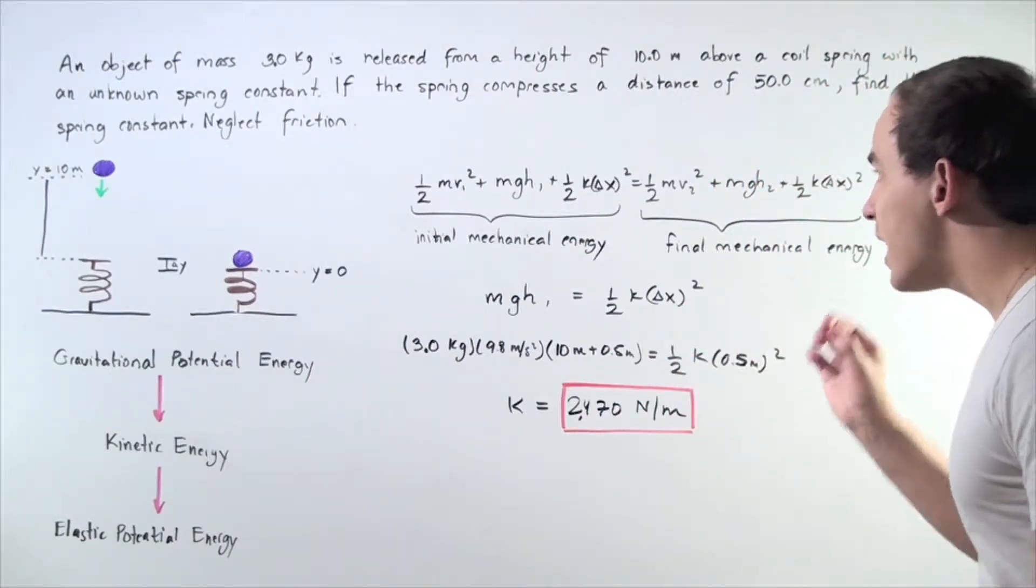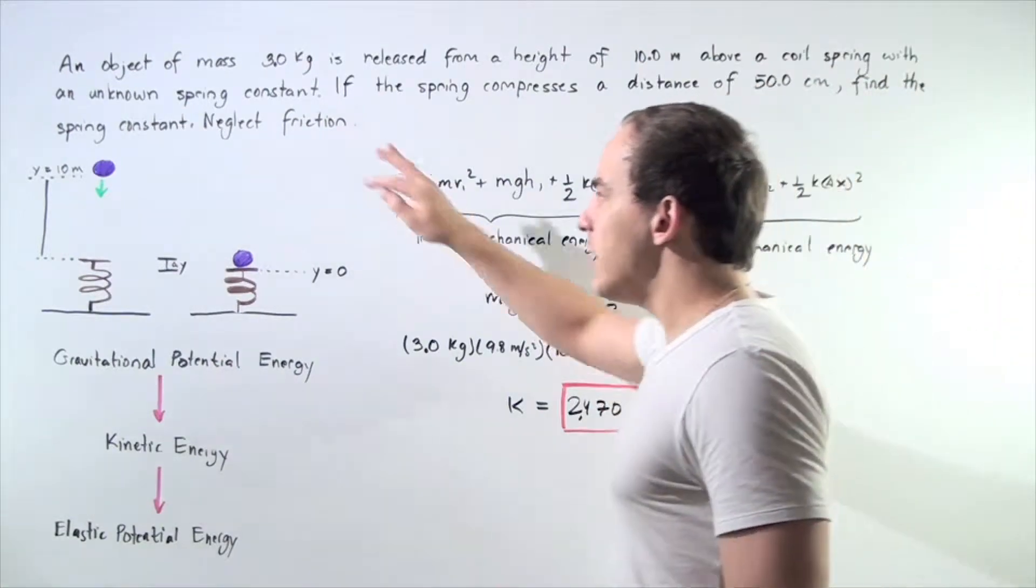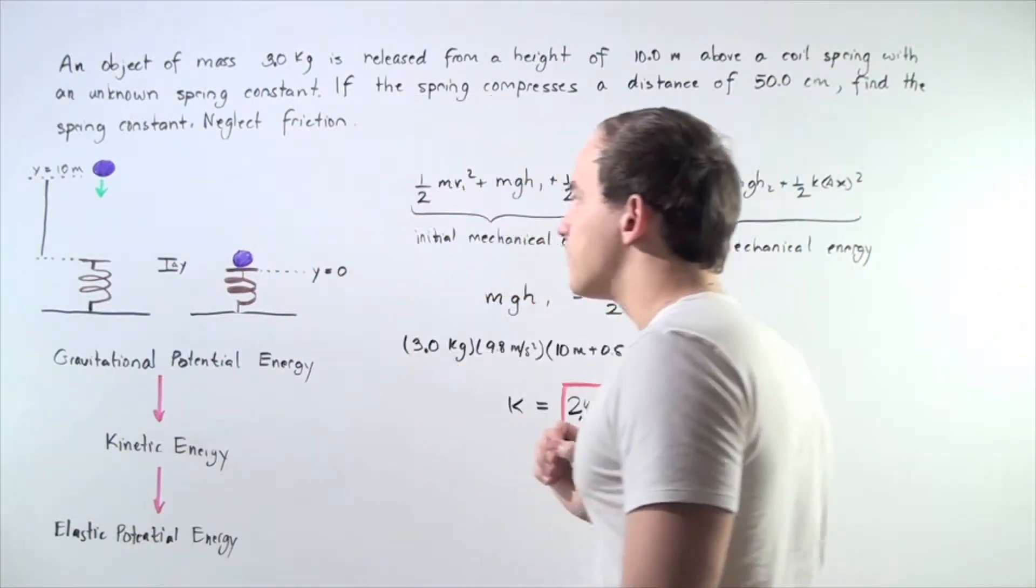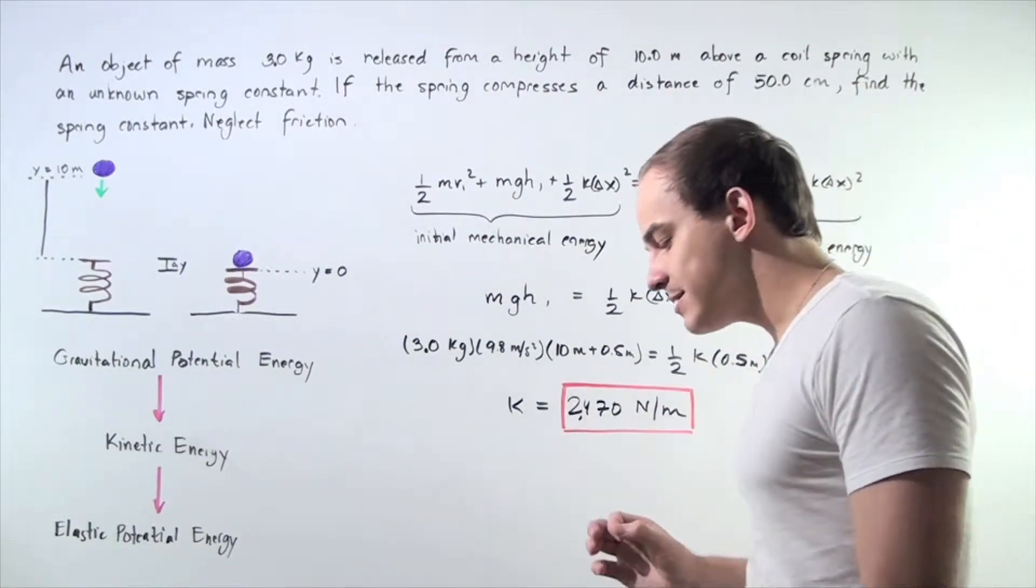The spring constant of the spring is not known. Suppose the spring compresses a distance of 50 centimeters when the ball hits the spring. We want to calculate, using that information, the spring constant.